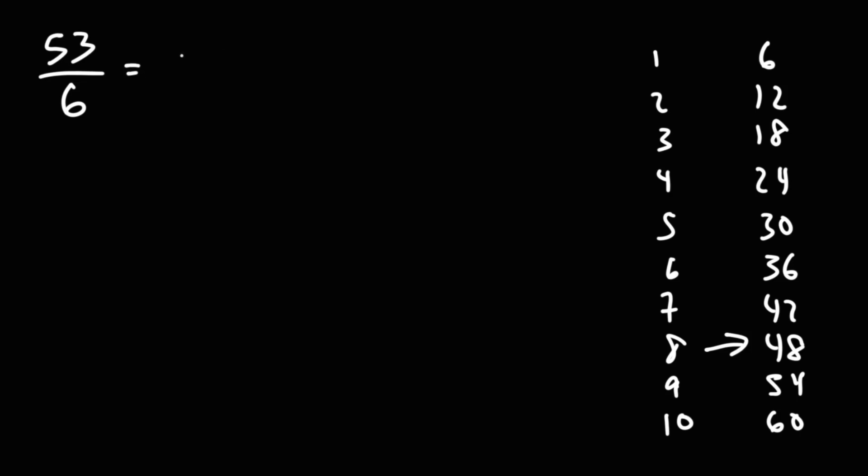So I'm going to break down 53 into 48 plus 5. The missing number 5, you can get it by subtracting 53 by 48. It'll give you 5. The denominator must be the same.